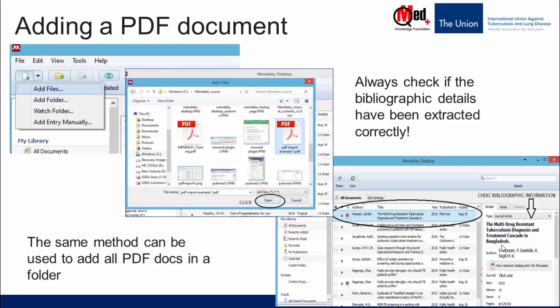The next option is adding a PDF document. Adding a PDF file or a folder containing many PDF files is straightforward — click on 'Add Files' or 'Add Folder', browse, and select the file or folder you want to add. The most important point to note is that the import of bibliographic details from PDF documents is not always perfect; in fact, often there are a lot of errors. Hence, it is very important to check each field and correct errors manually.